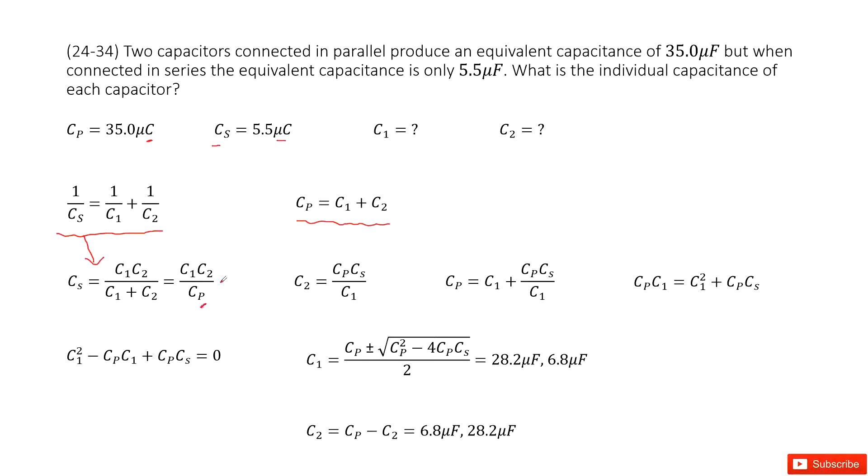There, right? Now we can replace C2 as Cp times Cs divided by C1, right? Now we input C2 inside. You can see now we get the equation look like this one.